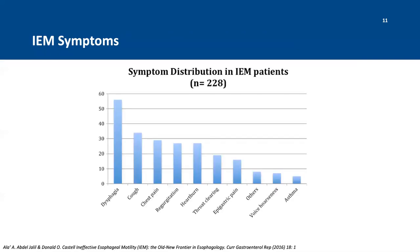IEM is a minor motility disorder, and 30% of patients undergoing high-resolution manometry for any reason can have IEM. The most commonly reported symptom is dysphagia, followed by symptoms of acid reflux. However, there is significant controversy about the causal relationship between IEM symptoms such as dysphagia and the severity of IEM. Impaired bolus clearance may be more responsible for dysphagia than the ineffective esophageal motility itself.